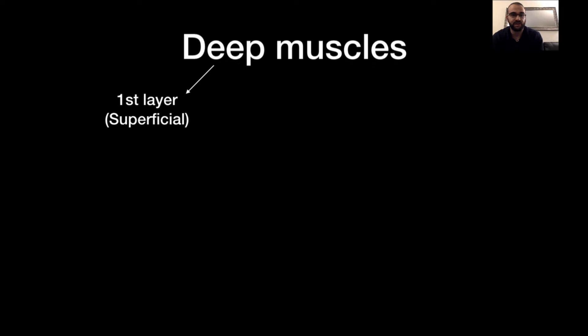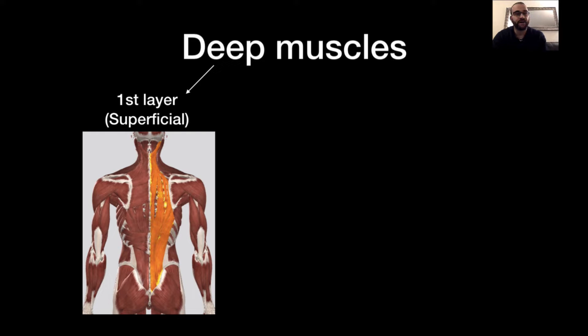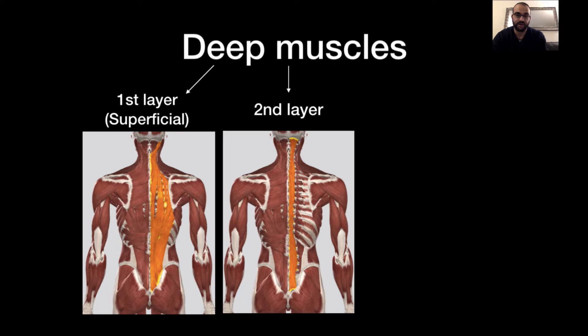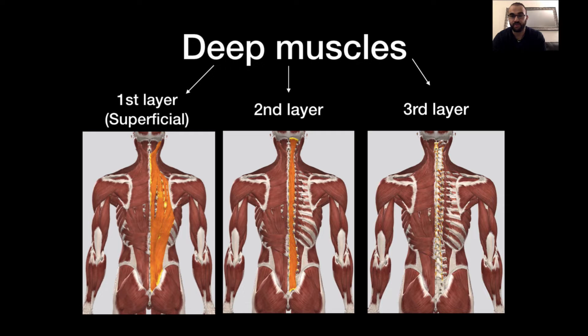The deep muscles of the back are also divided into layers. The reason why muscles are divided into layers is because when you operate it's easier to map where you are in the body and see how deep you are. The first layer of the deep muscles are also called the superficial muscles, containing the long muscles and the erector muscles that allow you to stand up straight and rotate the trunk. The second layer is visible after removing the first, and the third layer contains the innermost muscles closest to the vertebrae.